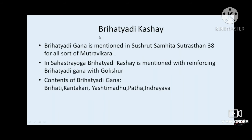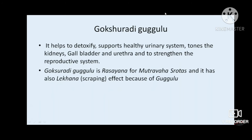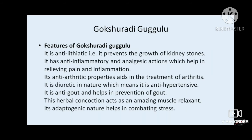The research was conducted on grade 3 DKD and demonstrated dramatic results with Bruhatyadi Kashaya. Gokshuradi Guggulu is a drug of choice for diabetic kidney disease — it detoxifies and supports the healthy urinary system, tones the kidneys, acts on the urethra, is a rasayana for mutravaha srotas, and has scraping action due to guggulu. It is anti-lithiatic, anti-inflammatory, anti-gout, and most importantly adaptogenic — which helps combat oxidative stress in chronic disorders.